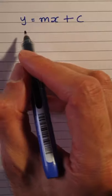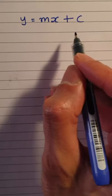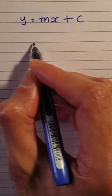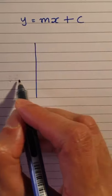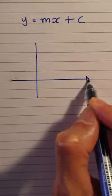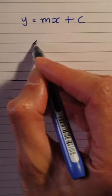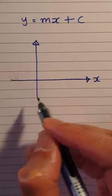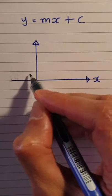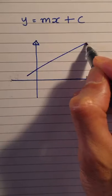y equals mx plus c is the format that we write down the equation of a line. For example, if you have a set of axes, you've got the x-axis and the y-axis, I want to draw a straight line here. So let's say this is my line.